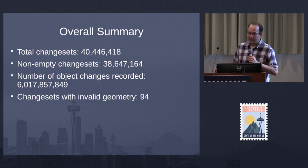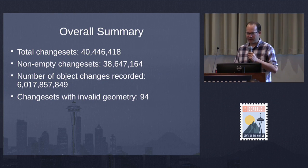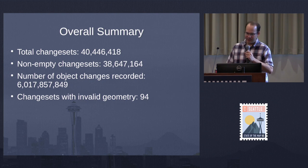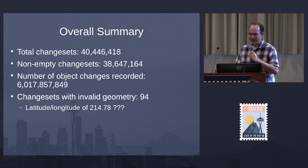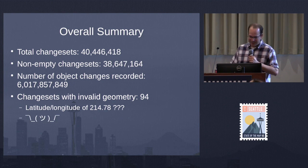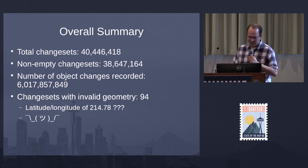When I started analyzing spatial aspects of the changesets, I started getting errors from Postgres saying I had invalid geometry. I thought, how can I have invalid geometry? It's a box — two sets of latitudes and two sets of longitudes. Well, it turns out if your latitude and longitude is 214, it is indeed invalid. How were these created? I have no idea — undoubtedly some bugs in early versions of the API. I think the last one I saw was around 2014.